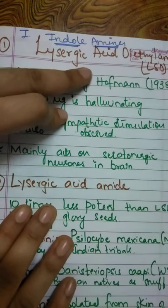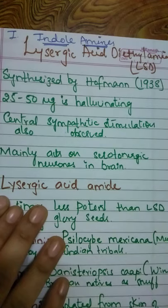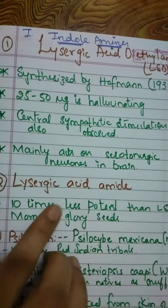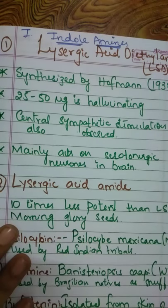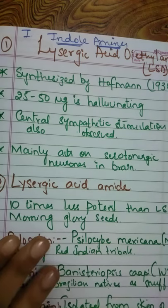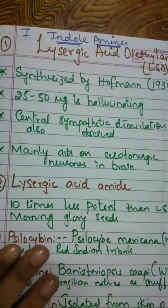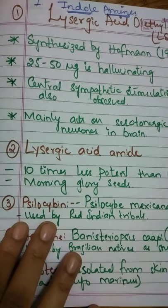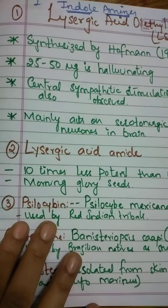Another drug in this class is lysergic acid amide. Note the distinction: lysergic acid diethylamide has two ethyl groups, whereas lysergic acid amide does not. Lysergic acid amide is a close relative of LSD but is 10 times less potent, and it is mainly found in morning glory seeds.